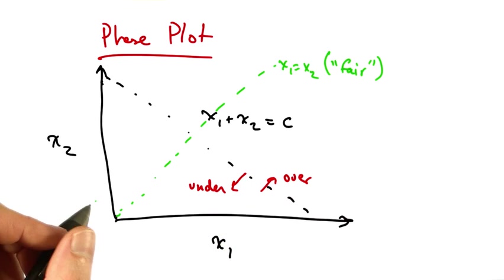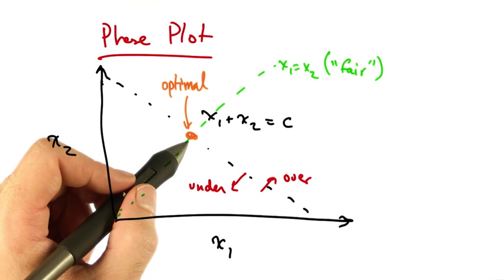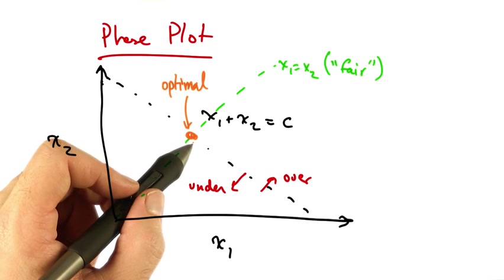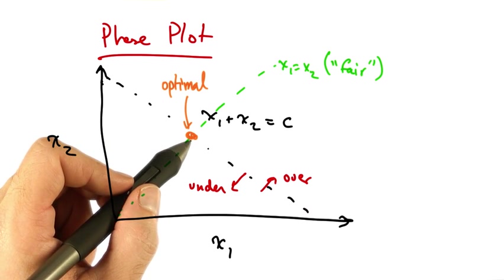We can also represent another line, x1 equals x2, as some notion of fair allocation. So the optimal point is where the network is neither under or overutilized and when the allocation is fair.